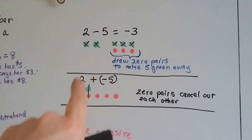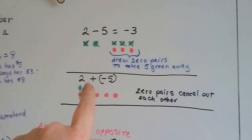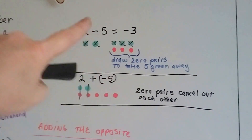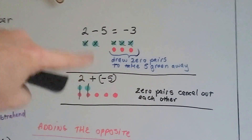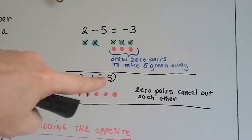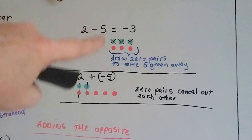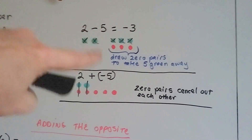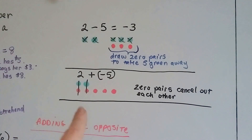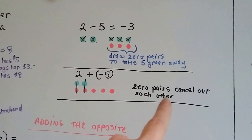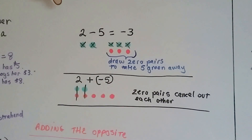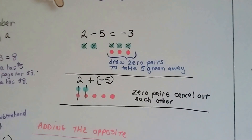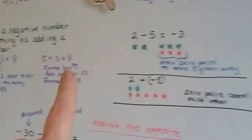2 minus 5 is the same thing as 2 plus negative 5 — it's the opposite. Instead of taking away 5, we're adding a negative 5. It's the complete opposite. We're going to end up with negative 3 because the zero pairs cancel each other out. Exact same thing.